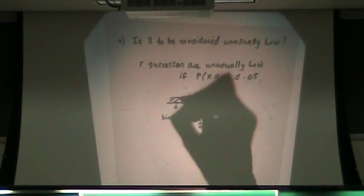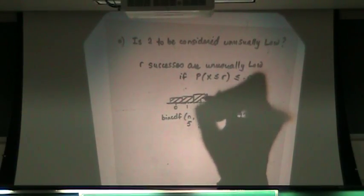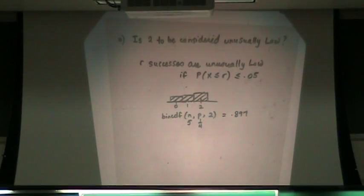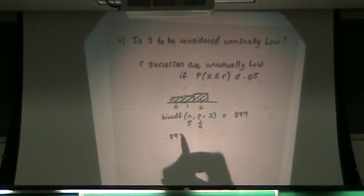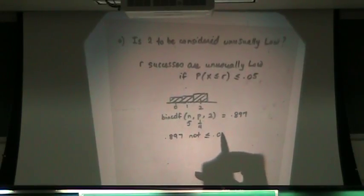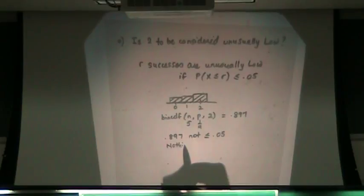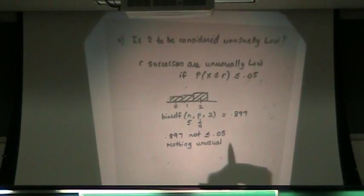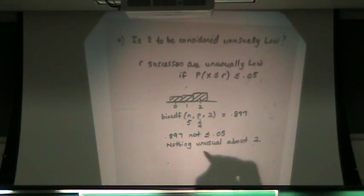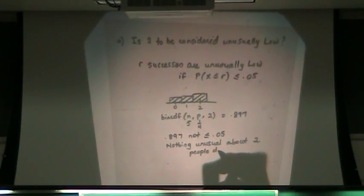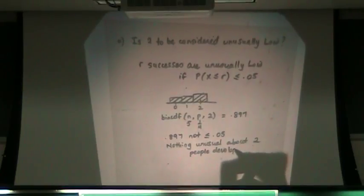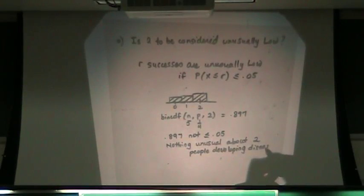I took the sum of all of these because I want two or less. So 0.897 is not less than or equal to 0.05, so there's nothing unusual about two people developing the disease after exposure.